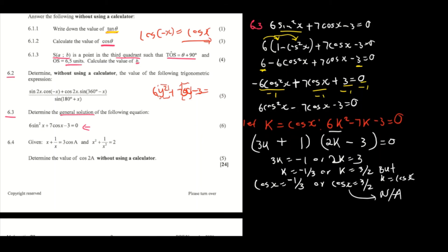Finding a solution for cos x = 3/2 is impossible — so that is not applicable, no solution. To find the solution for cos x equals negative 1/3, first find the reference angle: x equals cos⁻¹(1/3), neglecting the negative for now. The reference angle is 70.53°.